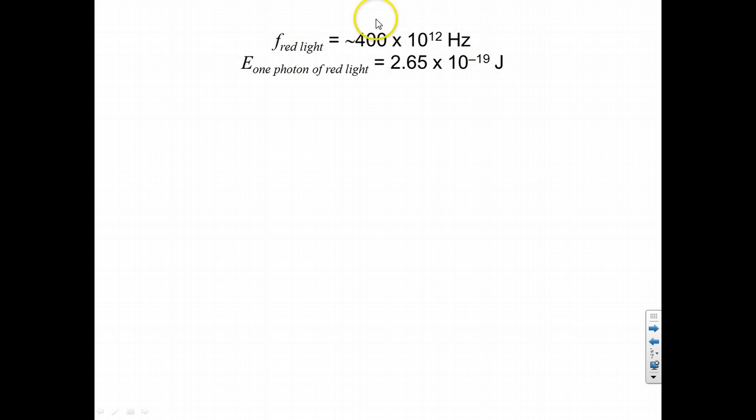Talking about red, though, here's the frequency of red light. It's about 400 terahertz, or 400 times 10 to the 12 hertz. And if we plug this frequency into the equation e equals hf, then we get that the energy of one photon of red light is this.